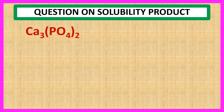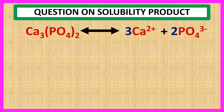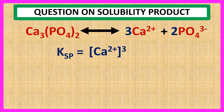Ca₃(PO₄)₂ dissociates as 3 Ca²⁺ ions plus 2 PO₄³⁻ ions. So the solubility product, i.e. Ksp, is equal to [Ca²⁺]³ into [PO₄³⁻]².